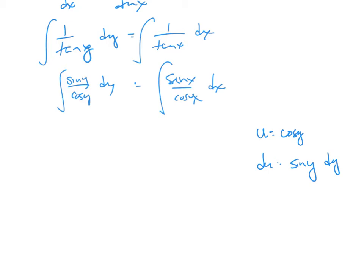And so I get 1 over u du is equal to, this one here is going to be the same thing, but I'm going to use a different variable as opposed to u, we'll call it t. So I'm going to get 1 over t dt, and the same thing applies.